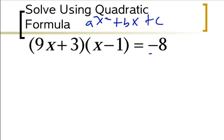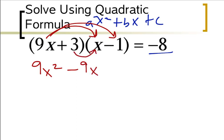We're going to leave the negative 8 over there for now because it has to be equal to 0, but we need to FOIL on the left hand side first. So 9x times x gives me 9x squared, 9x times negative 1 gives me negative 9x, 3 times x is my inner so I get plus 3x, and 3 times negative 1 gives me negative 3.